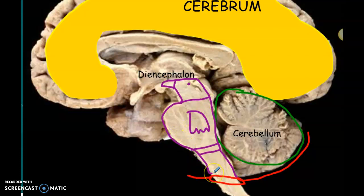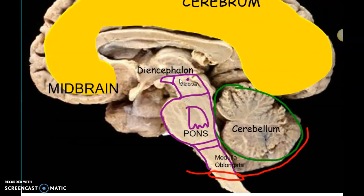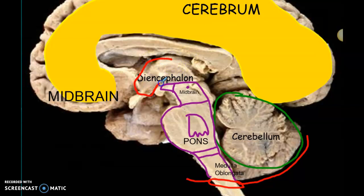Now let's divide the pregnant bird into three parts: the head, the belly, and the legs. The head of the bird is known as the midbrain. The pregnant belly of the bird we call the pons. The legs of the bird we call the medulla oblongata — some people just say medulla. So on your brainstem you have the midbrain, the pons, and the medulla oblongata. The four major parts of the whole brain are the diencephalon, the cerebrum, the cerebellum, and the brainstem.